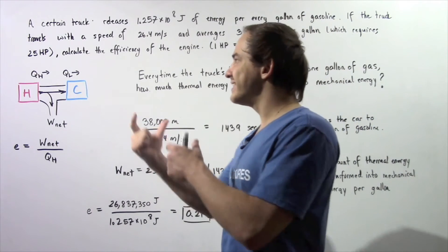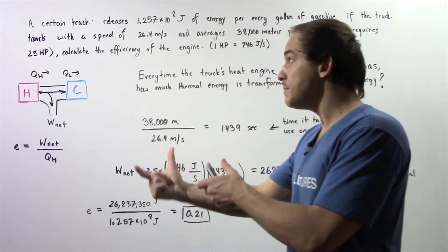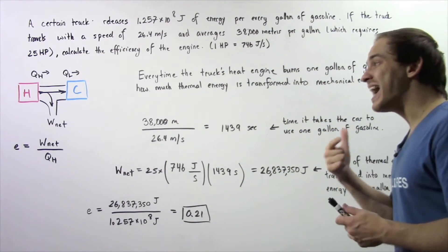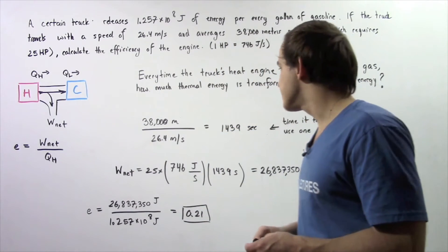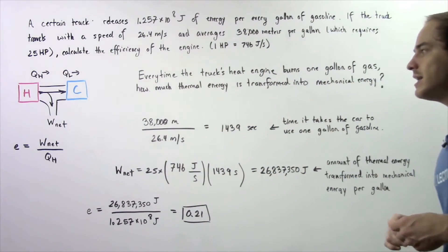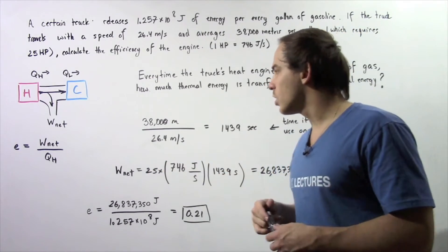To calculate how much work is produced, we essentially take the distance, divide that by the speed, and that gives us the time it takes for our truck to burn 1 gallon of gasoline. And we can use that then to calculate the network.